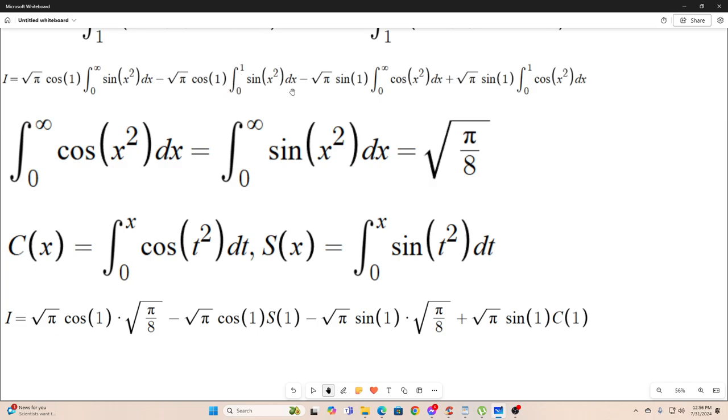And then we replaced this. This is the Fresnel sine integral of 1. Notice our x, in this case, is 1. So that is just c of 1. I'm sorry, s of 1. And I did the same thing over here. Replaced this with the square root of pi over 8, and replaced this with c of 1. So that is, we're almost done. A little bit of simplification, and we are done.